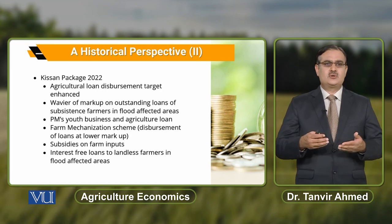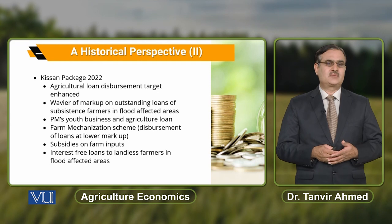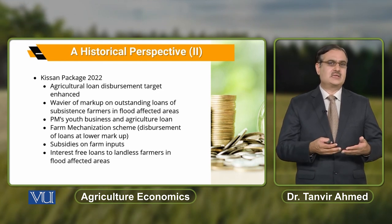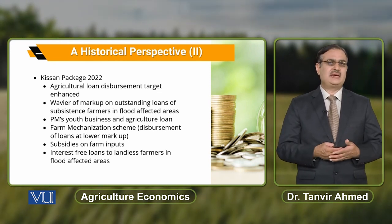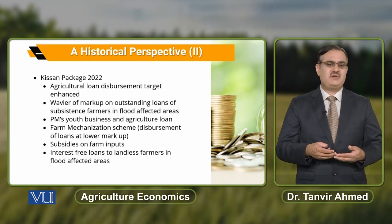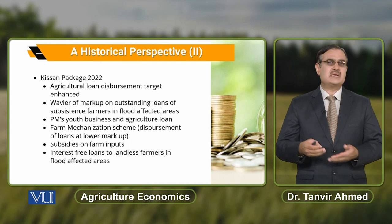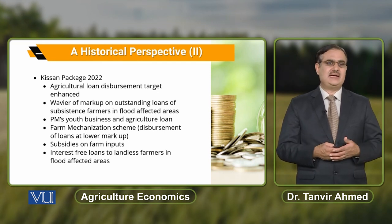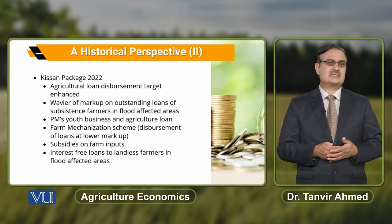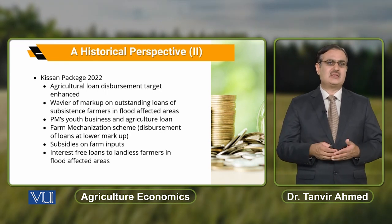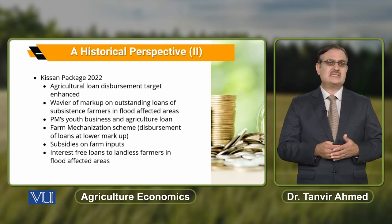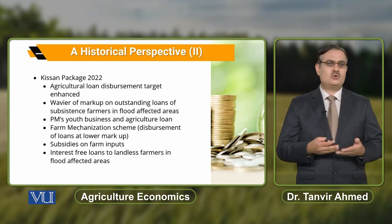The objective of agricultural loan disbursement is that when there is availability of credit to purchase inputs, agricultural productivity will increase. This is the objective of the agricultural sector — to promote the agricultural sector of Pakistan. Then, a farm mechanization scheme was introduced, with loans disbursed at lower markup rates.